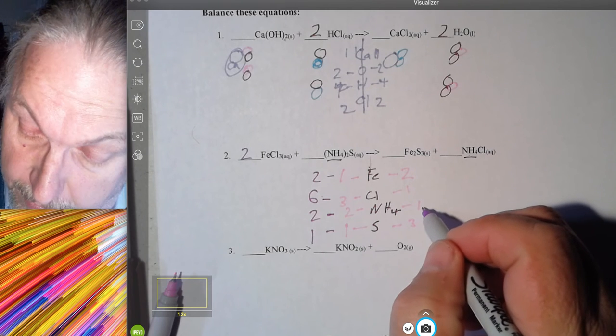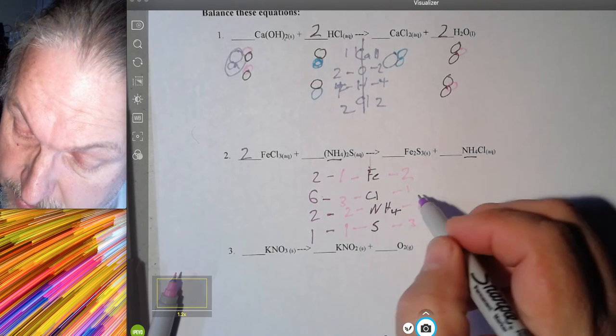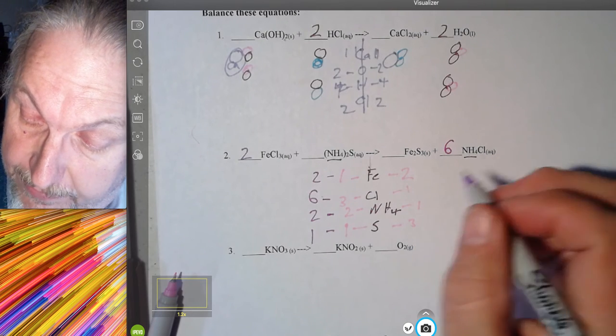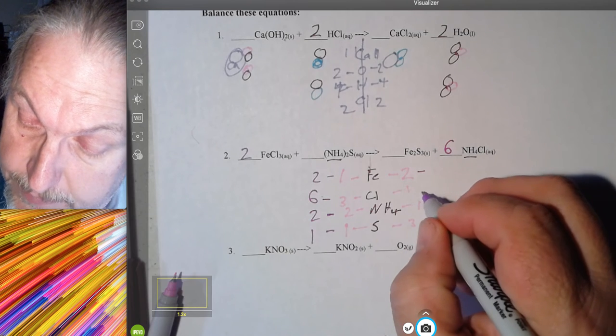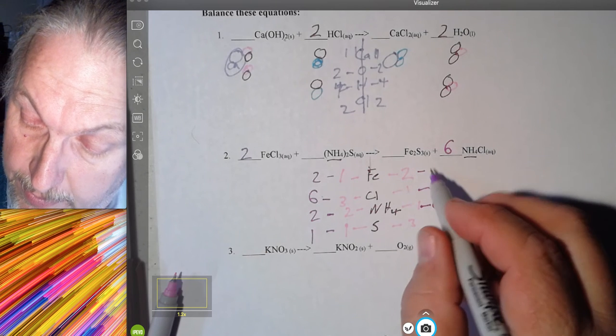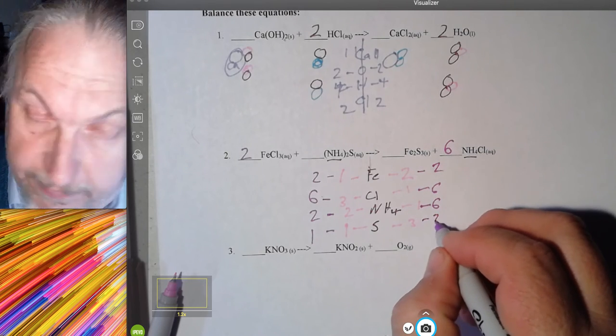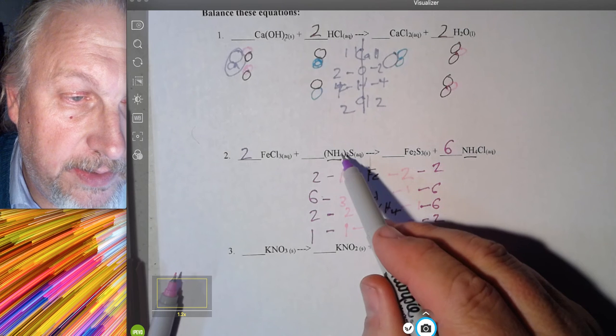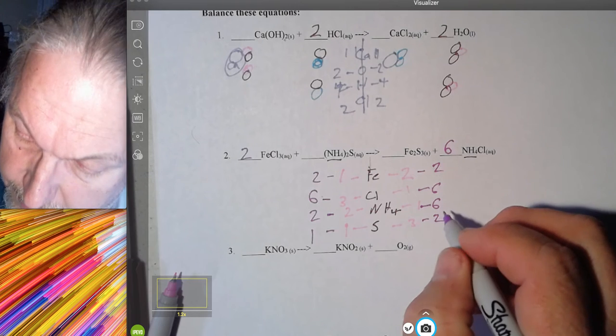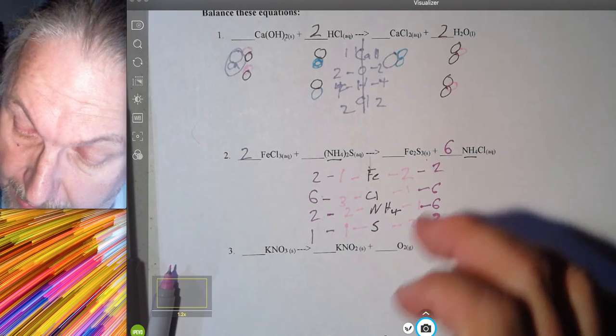Let's work on our chlorines and our ammonias. So I need six chlorines. I've got one chlorine here. If I put a six right there, that's going to give me six chlorines. It also will give me six NH4s. Now, again, I'm just going to keep up on this line here. I've still got two irons. I've got two sulfurs. Excuse me. Three sulfurs. Three sulfurs. My fault. Three sulfurs. So we're still not balanced, but we're getting there. We're getting closer.